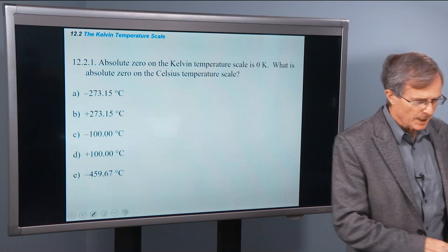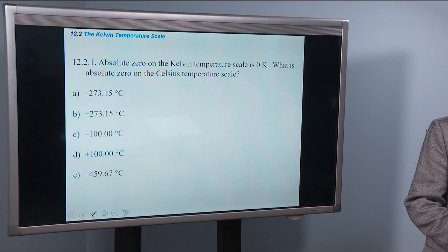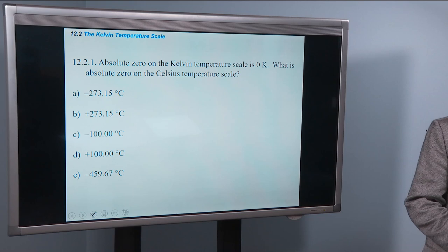Absolute zero on the Kelvin scale is zero K, like we talked about. What's absolute zero on the Celsius temperature scale? We actually just talked about that on the previous slide or two, negative 273. It's on that little graphic.